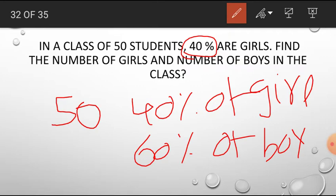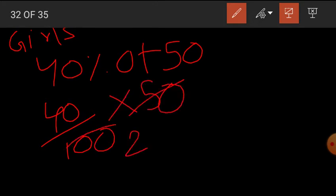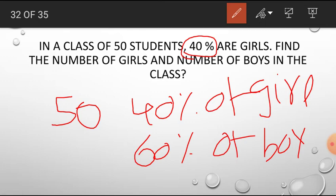So we can solve this like 40 percent of 50. That is for girls. 40 percent means 40 by 100 into 50, right? 2 times and into 40, it is 20 times, so the final answer is 20. So there are 20 girls in the class.